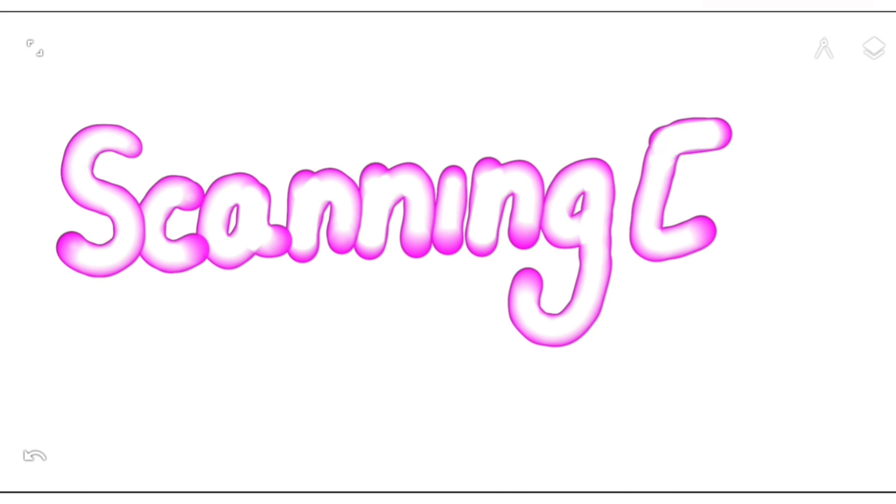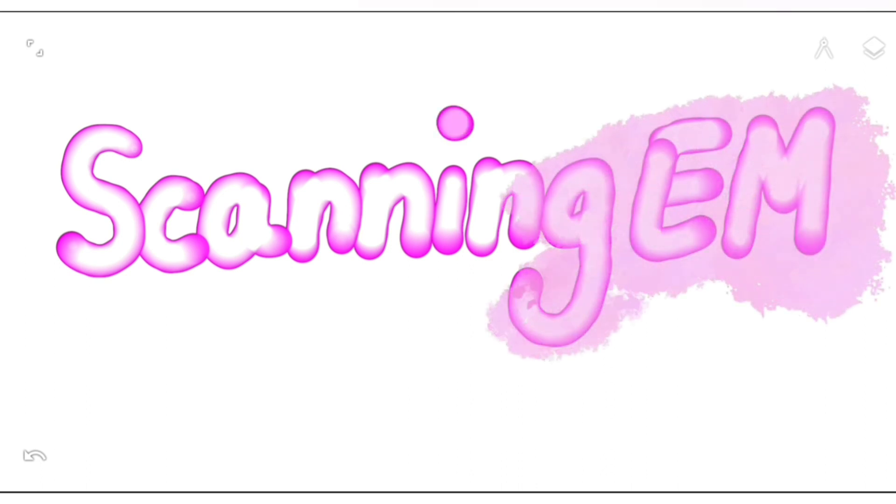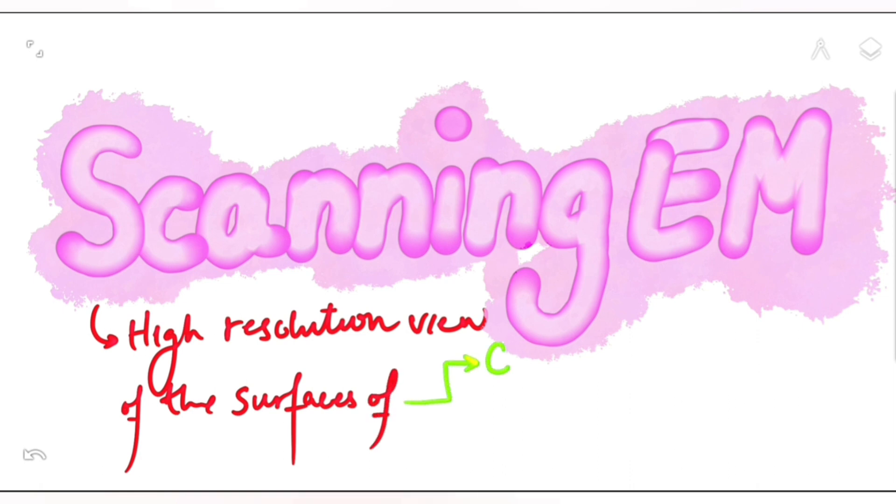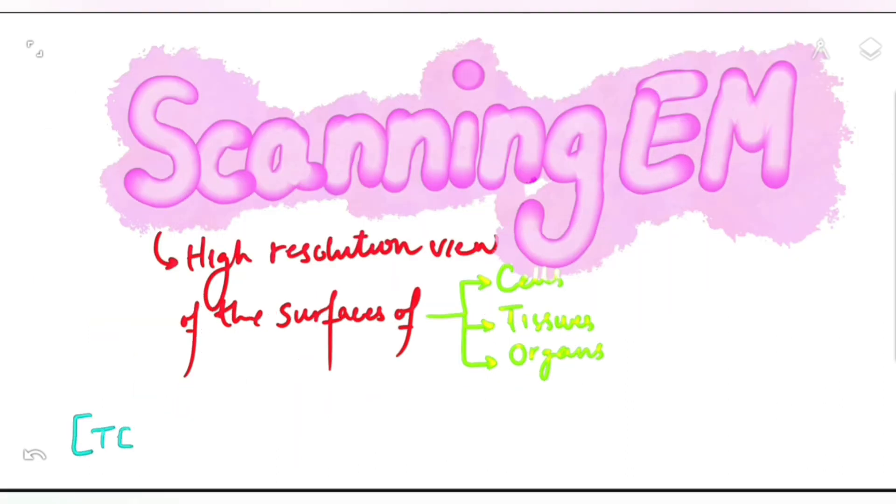Scanning electron microscopy using a scanning electron microscope. Using scanning electron microscopy allows us to have a high resolution view of the surfaces of whatever we want to see, whether it is cells, tissues, or organs. We always see the surfaces with a very high resolution.